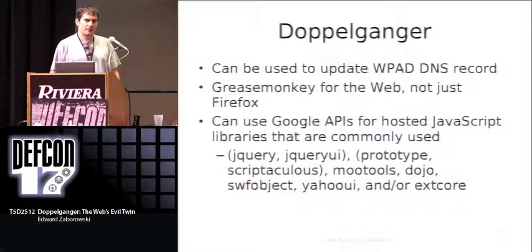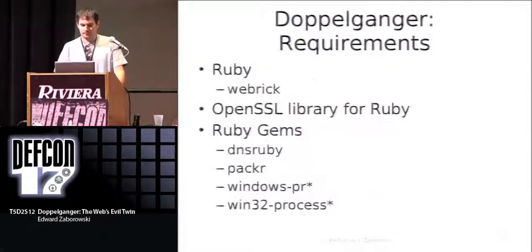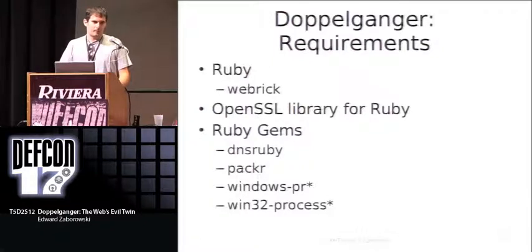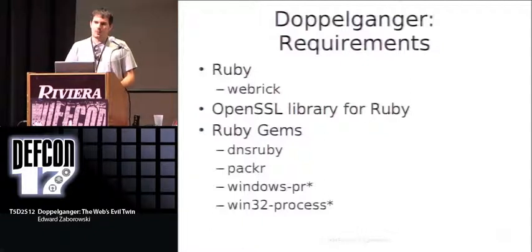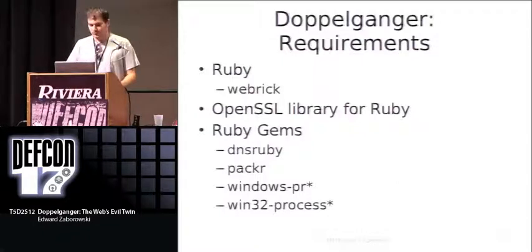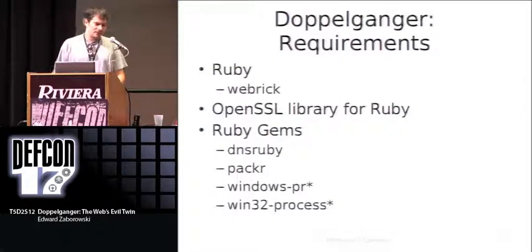Additionally, you can use Google APIs for part of the JavaScript, so that way you don't need clients pinging your local machine to get them — they can go to an already trusted site and download them from there. Doppelganger uses Ruby, and the core and heart and soul of it is WEBrick, used as the HTTP server serving up files like the WPAD file or images sent to the client. It also uses RubyGems, DNS Ruby for updating DNS, and Packer for packing JavaScript and injecting it directly into the page. Windows WPR and win32 process handle Windows interoperability, though binding to a port on Windows hasn't been working reliably.